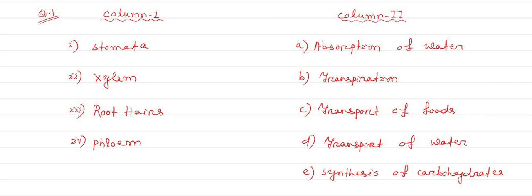The first question is a column matching question. Column 1 has different organs of plants, and column 2 has functions of those organs. We have to match the function with the respective organs.